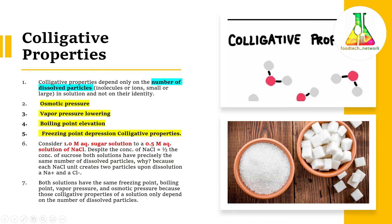The first is osmotic pressure. You know that if we have a semi-permeable membrane with solutions on two sides, solvent transfer occurs due to solute concentration difference, and the pressure exerted is called osmotic pressure. The second colligative property is the decrease of vapor pressure. The third colligative property is boiling point elevation. And the fourth colligative property is depression in freezing point.